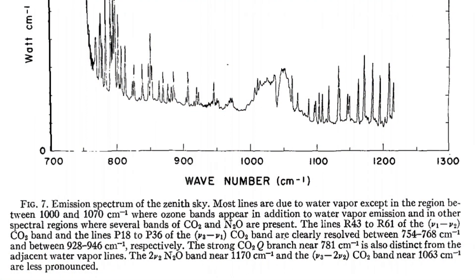Finally, he wrote, this strong CO2 Q branch near 781 per centimeter is almost distinct from the adjacent water vapor lines. His claims had made me think for a long time. Then I found that the two CO2 combination bands should be located at 1674 per centimeter and 590 per centimeter respectively. Let me know if I'm wrong. Given the three basic frequencies are 1,257, 667, 2,343 respectively.